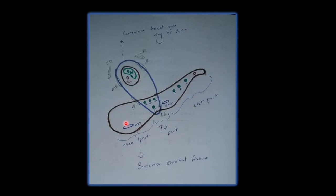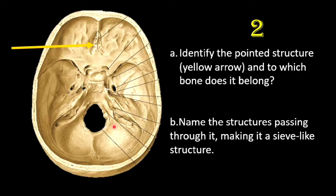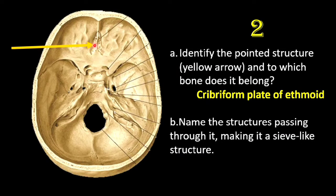The next question: identify the structure pointed with the yellow arrow and state which bone it belongs to. The structure is the cribriform plate, and it belongs to the ethmoid bone. Name the structures passing through it making it a sieve-like structure — the sieve-like appearance is due to the passage of the olfactory nerve rootlets through those openings.